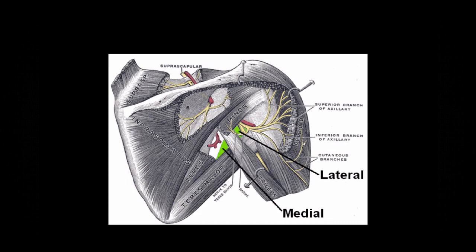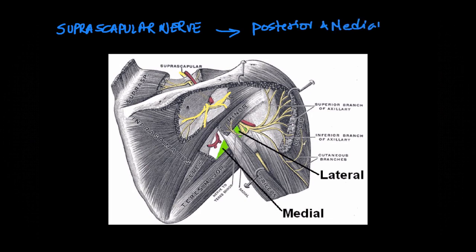Let's also have a look at this from another diagram. Here you can see the branches of the suprascapular nerve entering the infraspinous fossa and supplying the shoulder joint. It supplies the posterior aspect and the medial aspect of the shoulder joint, whereas the axillary nerve and its branches generally supply the lateral aspect and the anterior aspect of the shoulder joint.